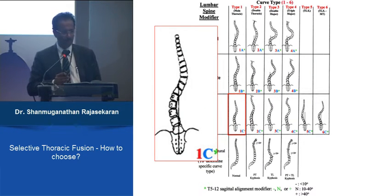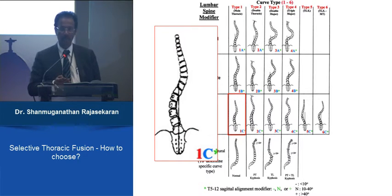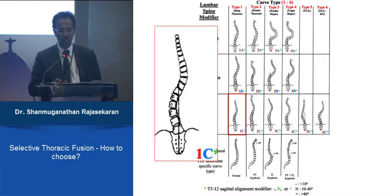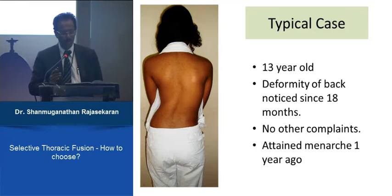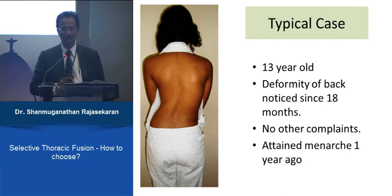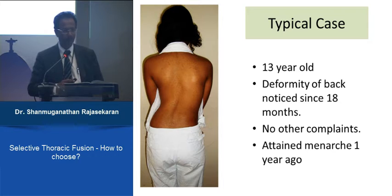The same principle defines the Lenke 1C curve, where the thoracic curve is the primary curve — larger, more structural, more rigid — and the lumbar curve is more flexible. This is the group we are talking about when considering whether selective thoracic fusion is better.